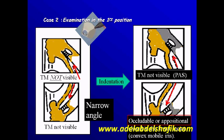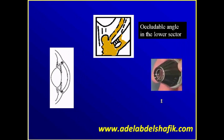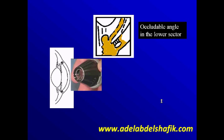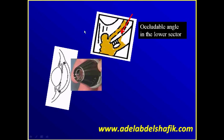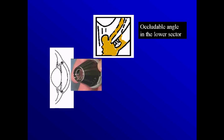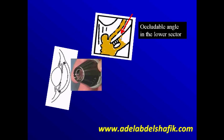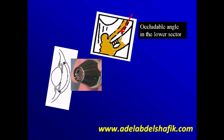If you diagnose an occludable angle, then you need to change the lens using the one-mirror Goldman, and ask the patient to rotate his eye. In this situation, while the patient is looking straight ahead, your line of sight cannot reach the trabecular meshwork. But if you ask the patient to look toward the mirror, then your line of vision can reach the trabecular meshwork and you know it's an occludable angle. If no trabecular meshwork is seen initially, and you ask the patient to look toward the mirror and now you can see the trabecular meshwork, then it's an occludable angle.